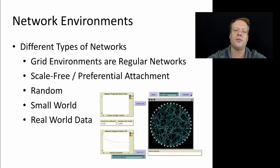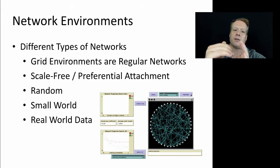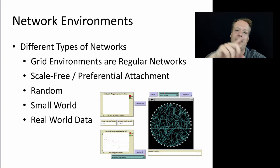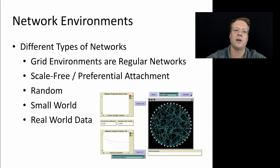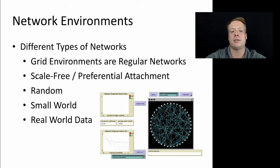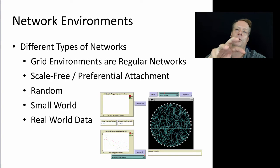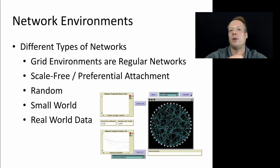There are a bunch of different types of networks that exist. You can have grid environments, which are essentially regular networks — square lattices where each of the connections are exactly the same. You can then have a scale-free network, often called a preferential attachment network, where connections between individuals depend on how many connections they already have. You can also have a random network, sometimes referred to as an Erdős–Rényi random network, where the probability of a link existing between any two individuals is controlled by some pre-specified probability.